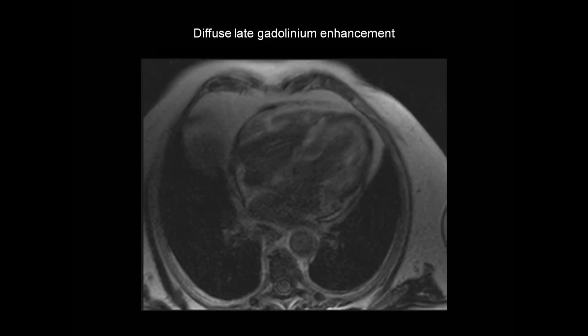When we perform late gadolinium enhancement imaging, we see the diffuse distribution of late gadolinium enhancement in the myocardium, as a consequence of the cardiac amyloid deposition.